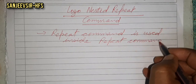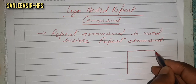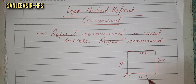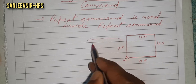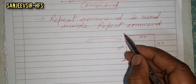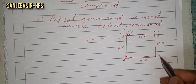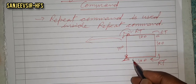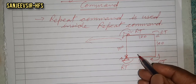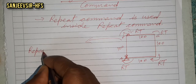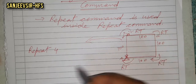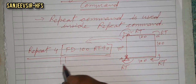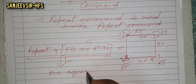When we need to draw a rectangle or square, suppose we need to draw a square with 100 steps. Using the repeat command, as discussed in a previous tutorial, the turtle turns clockwise with RT. We repeat four times because there are four sides: FD 100 and RT 90. This draws one square.